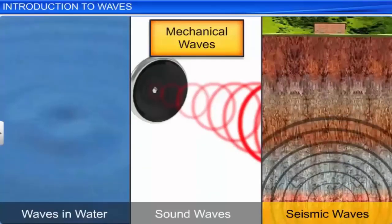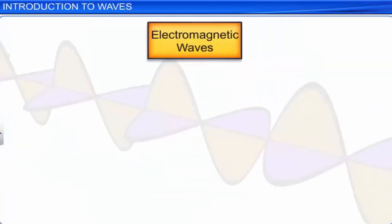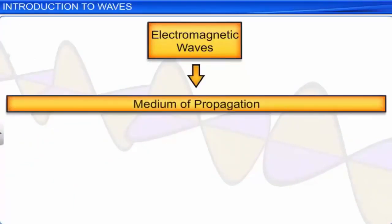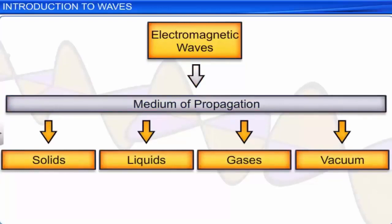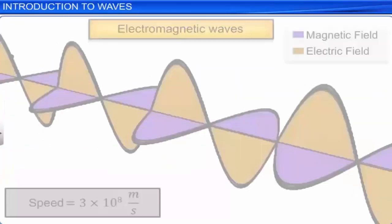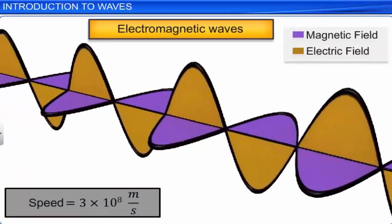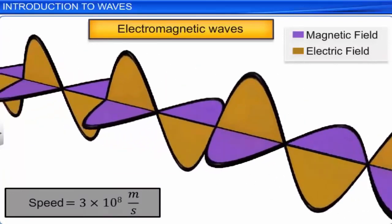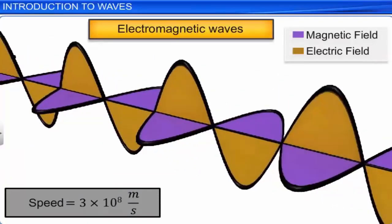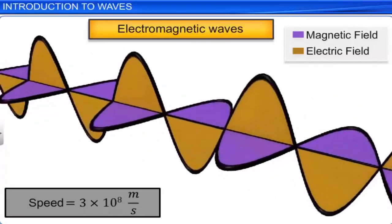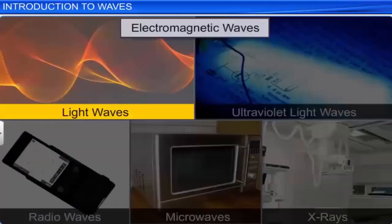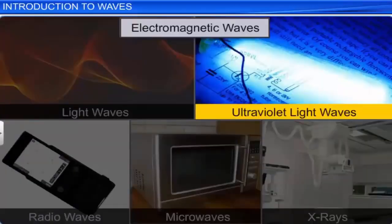Electromagnetic waves do not require any medium for propagation. They can travel through a vacuum too. They travel with a speed of nearly 3 × 10⁸ meters per second. Light waves, ultraviolet light waves, radio waves, microwaves, and x-rays are some examples of electromagnetic waves.